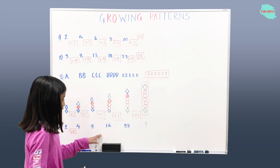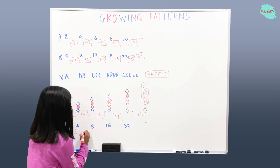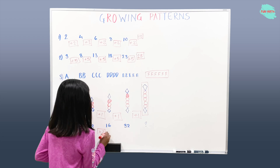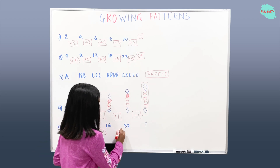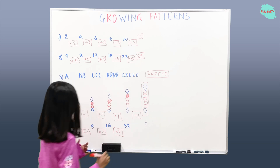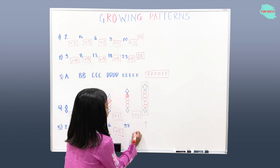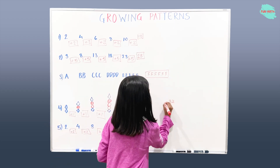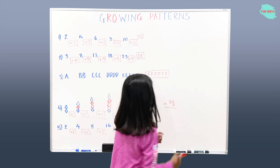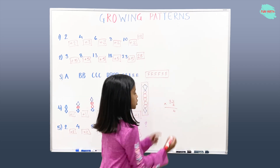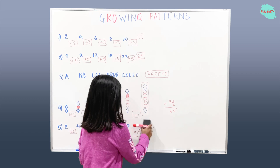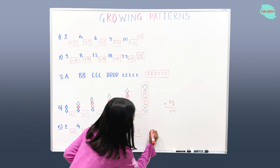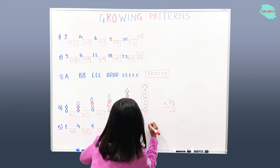Two times two gives you four. Four times two equals eight. Eight times two equals sixteen. Sixteen times two equals thirty-two. So the rule here is times two. That means we also have to do times two for term six. So what's thirty-two times two? Two times two is four, three times two is six, so thirty-two times two is sixty-four. That means the answer for the sixth term in example five is sixty-four.